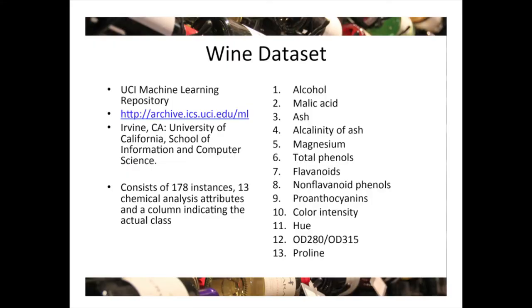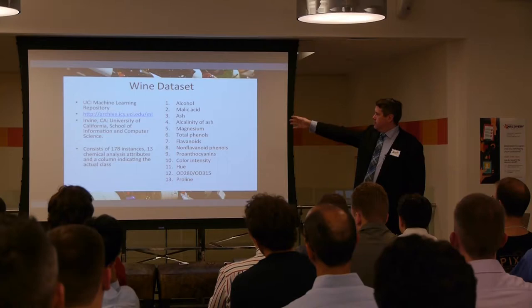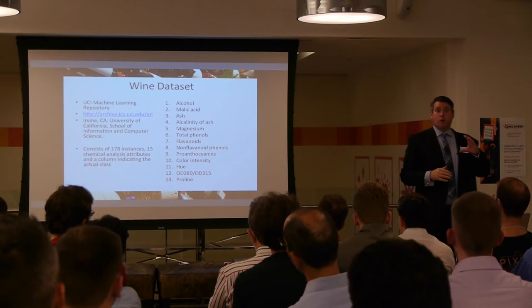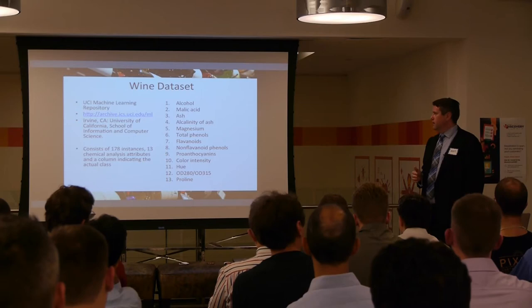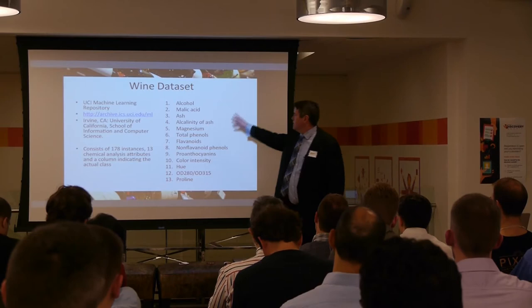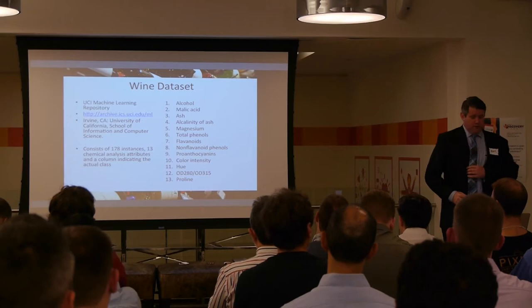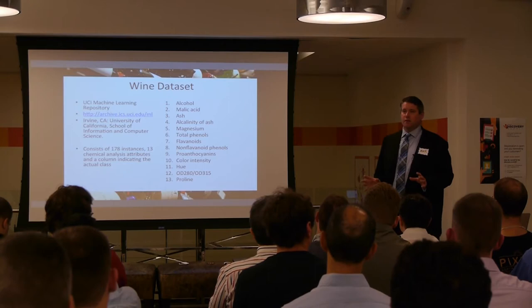Now let's look at a real dataset — this is a dataset on wine, I believe Italian wine. You can get the data from the UCI machine learning repository. There are 178 instances of the wine, and 13 different chemical analyses done on the wine. Some of them are not chemical analyses but color, polar intensity, and hue. The rest are all chemical analyses. It's a real-world dataset, so it won't be as clean and pretty, but it's really good to look at real data.